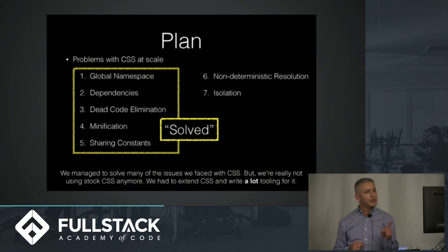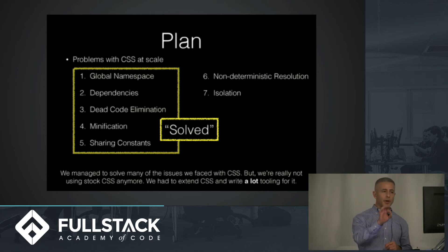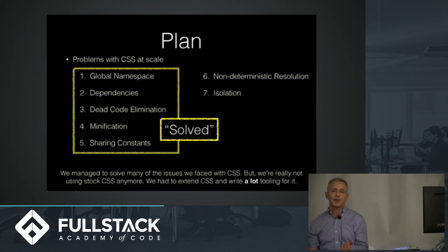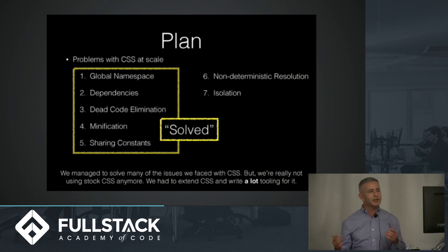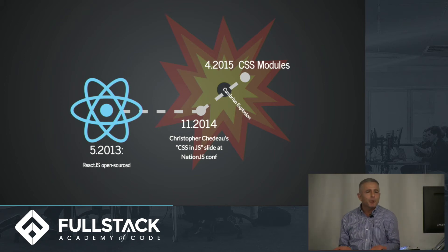Number six and number seven — non-deterministic resolution — that kind of has to do with having a class name that should be affecting a component but it's not quite working, and you have to put an exclamation point for important to make it work. Isolation is when somebody changes a class name when working on their component but doesn't know that it's being ported into another component and it messes that up. So he presented this, and some people pushed back about separation of concerns, and the Facebook guy was like, hey, that doesn't work for us — separation of concerns is great, but not if it's creating all of this extra work for us.